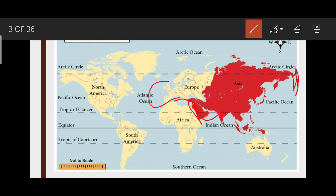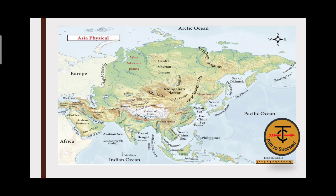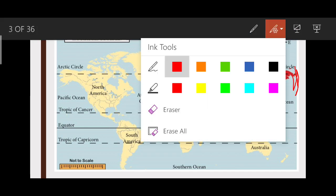Now let us look at the physical map of Asia and divide Asia into certain parts or regions. Total 48 countries are in Asia. We have East Asia, South East Asia — South East Asian countries number 10 — and further sub-regions we will cover.